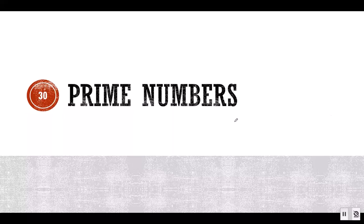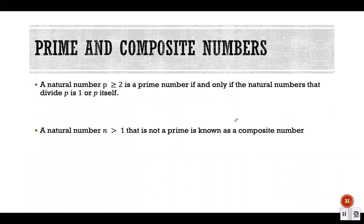In this segment we are going to talk about prime numbers. We will first see the definition of a prime number. A prime number is a natural number p greater than or equal to 2, if and only if the natural numbers that divide p are 1 or p itself. A prime number has to be greater than or equal to 2.